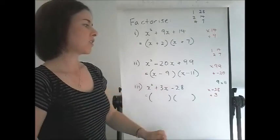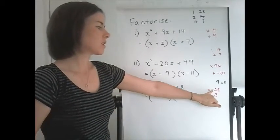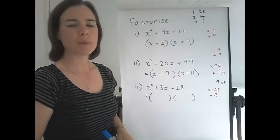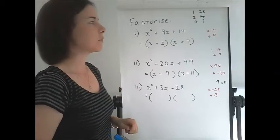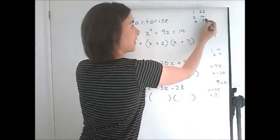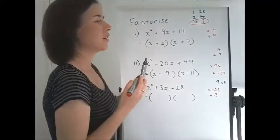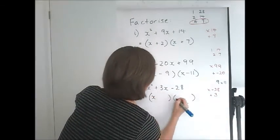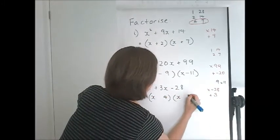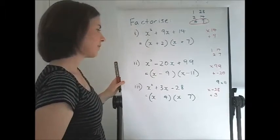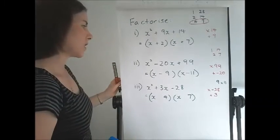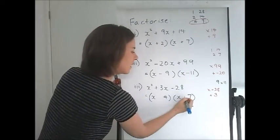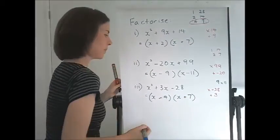None of them add to 3, but because we're multiplying to a negative, the signs have to be opposite anyway. So we need them to subtract to 3. And we've got that. 4 and 7 have a difference of 3. So where do the signs go to make sure that they add to positive 3? The bigger number needs to be the positive.